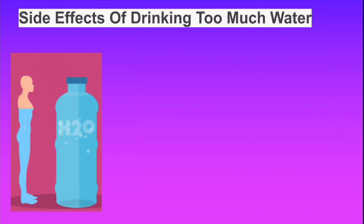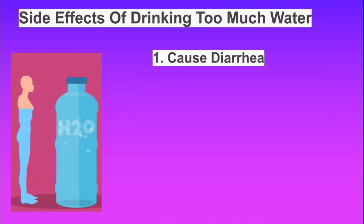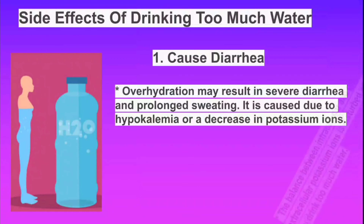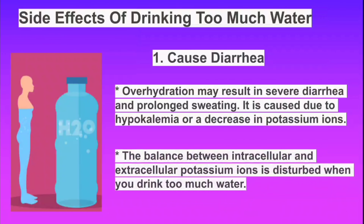Side effect number one is it can cause diarrhea. Overhydration may result in severe diarrhea and prolonged sweating. It is caused due to hypokalemia, or a decrease in potassium ions. The balance between intracellular and extracellular potassium ions is disturbed when you drink too much water.